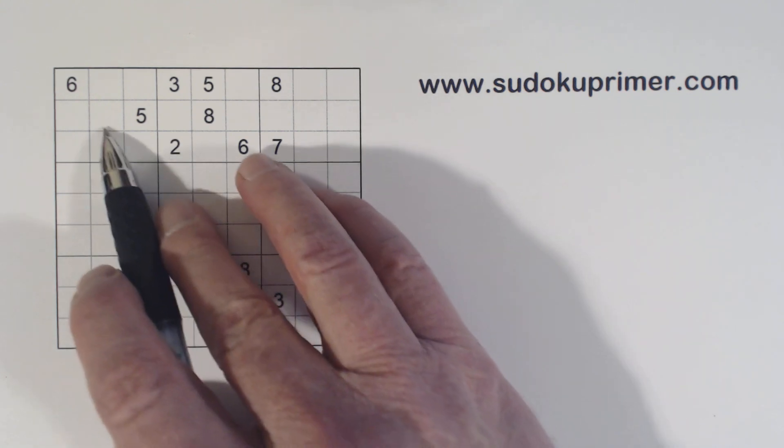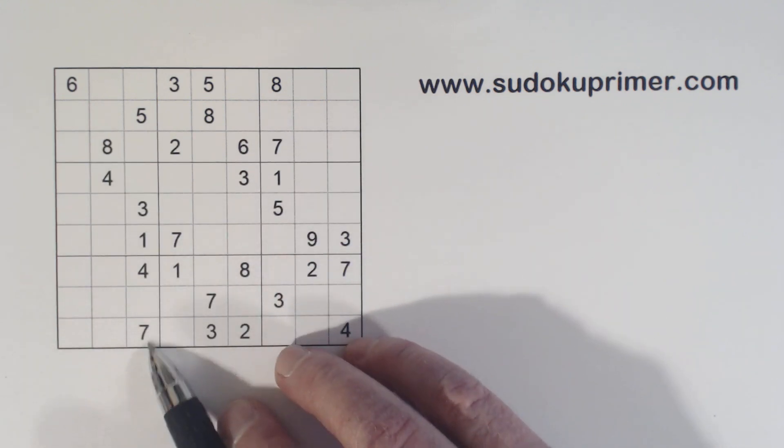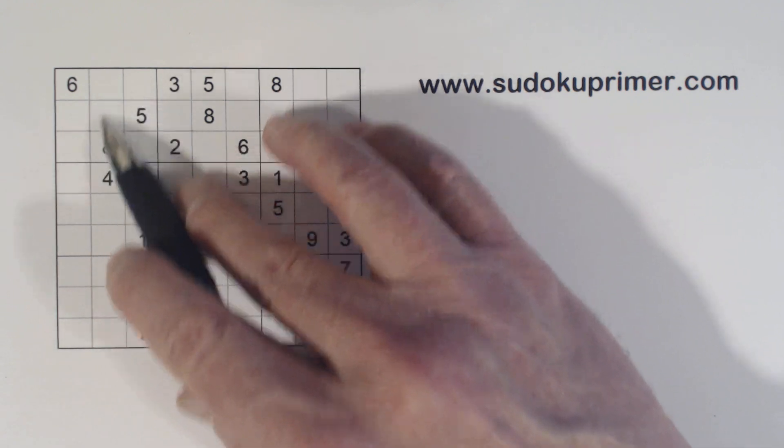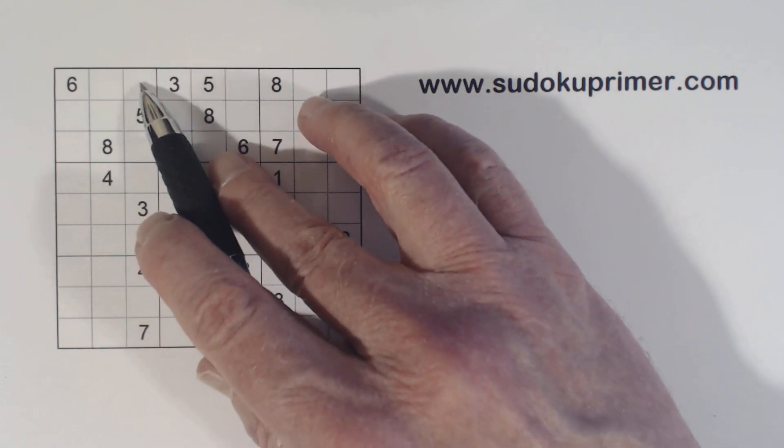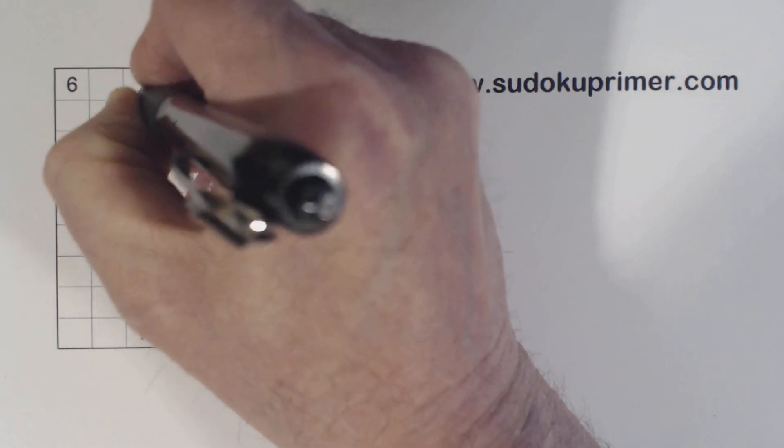First of all, we have a 1, 3, 4, 7 here. And that's these four cells, 1, 3, 4, 7. So that leaves 2 and 9 here. And with that 2, we can fill in the 2 and the 9.